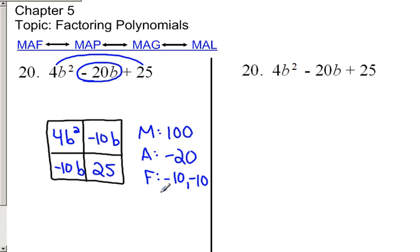The greatest common factor of 4B squared and negative 10B is 2B. Your greatest common factor of negative 10B and 25 is 5. The greatest common factor of 4B squared and negative 10B is, again, 2B. And the greatest common factor of negative 10B and 25 is 5.